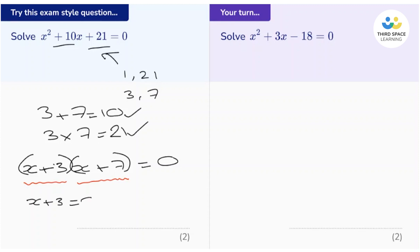So either x plus 3 equals 0, in which case x is negative 3, or x plus 7 equals 0, in which case x is negative 7. And there we go. We have worked out the solutions to our quadratic.